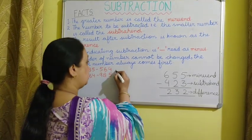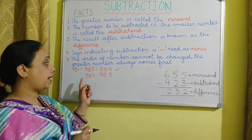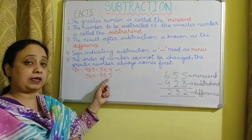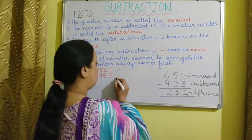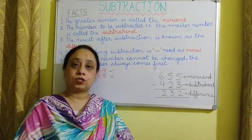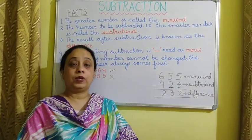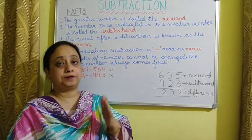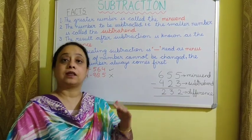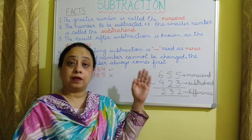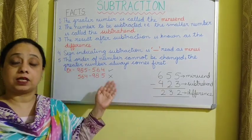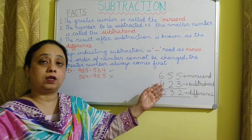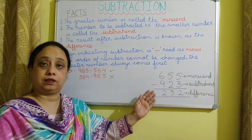This is correct. If we write the smaller number first and then the greater number, this is wrong. In addition, we can change the order — no matter which number is placed first, the answer is always the same. But in subtraction, we cannot change the order of the numbers.